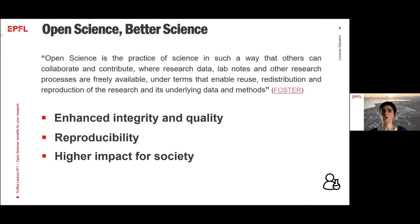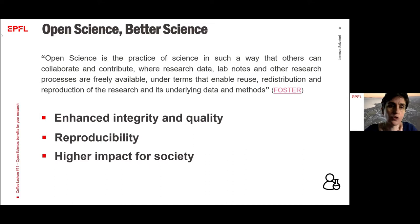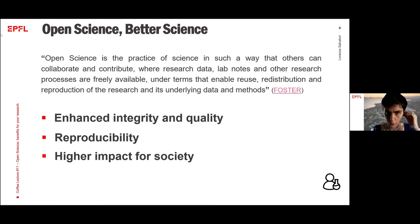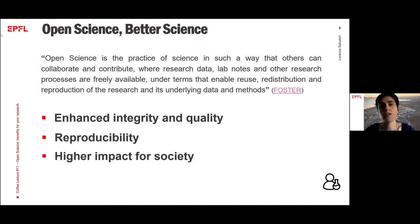I would assume that we all know what open science is. Someone just says that open science is better science, but if we want to stick to a more classical definition, I've chosen this one from Foster: open science is simply the practice of science and research in a way that others can collaborate and contribute. All research outputs — research data, lab notes, publications, methodology, and so on — are freely available in a way that enables reuse, redistribution, and reproduction of the research.